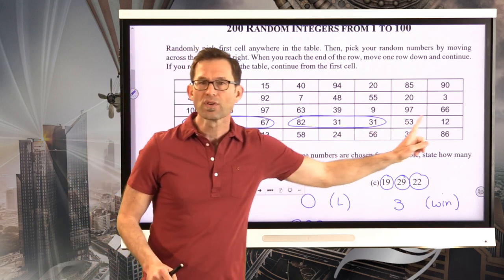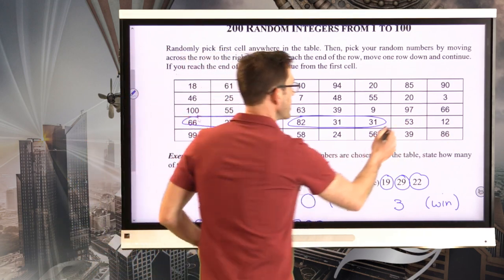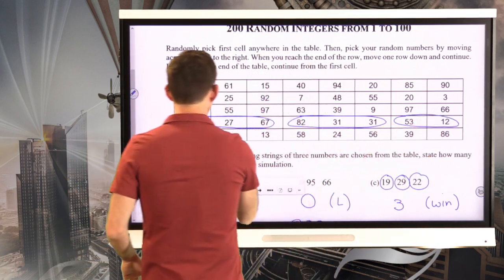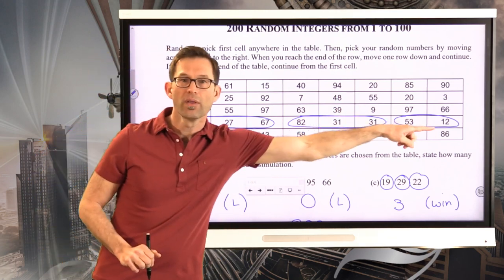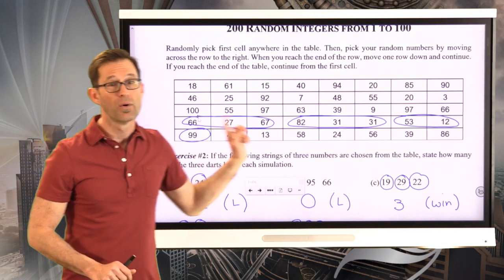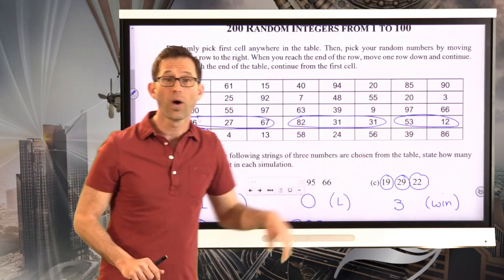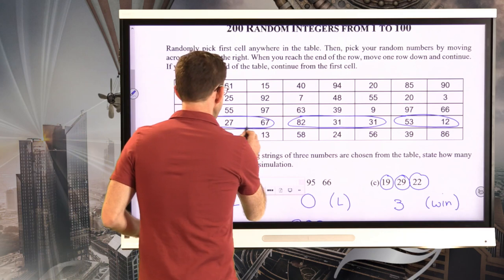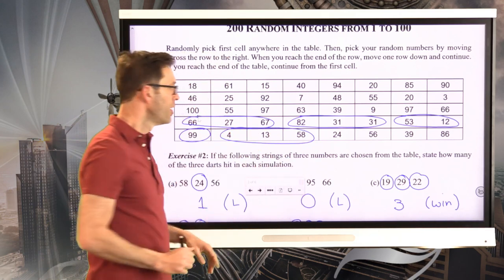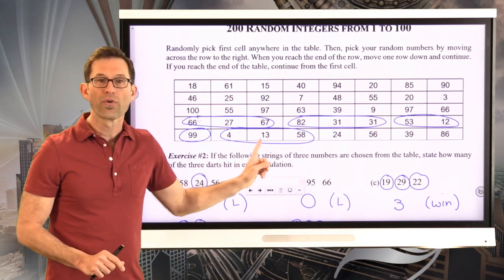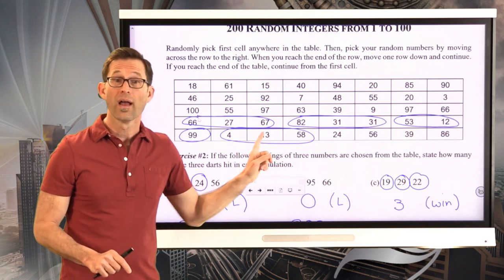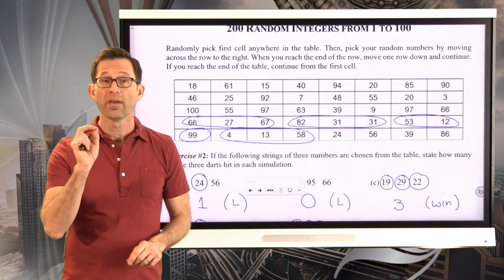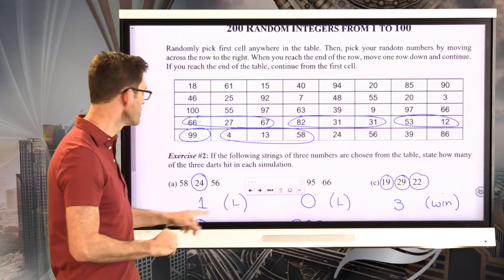Now, you might say, well, there's only two now left over. So, maybe I'd go 53, 12, and 99. So, I'd do the 53, the 12, and the 99. Well, again, there'd only be the one. The 12 would be the only one that fell in, still would lose the game. Then maybe I'd come over here and I'd have this set, 4, 13, and 58. Well, in that case, I'd win, because the 4 and the 13 are both hits. That's all I want you to do. But I want you to do it 20 times.